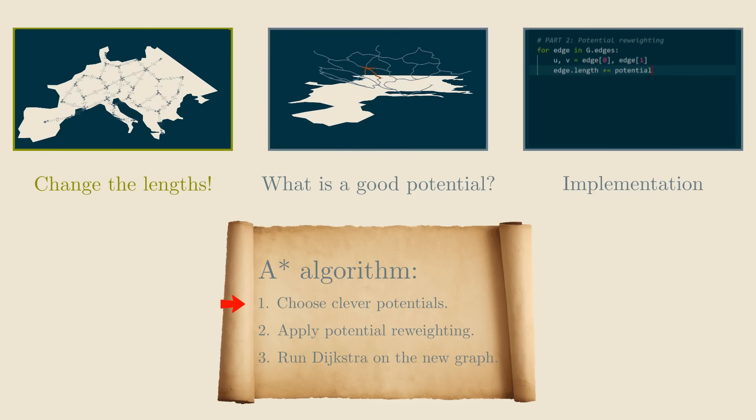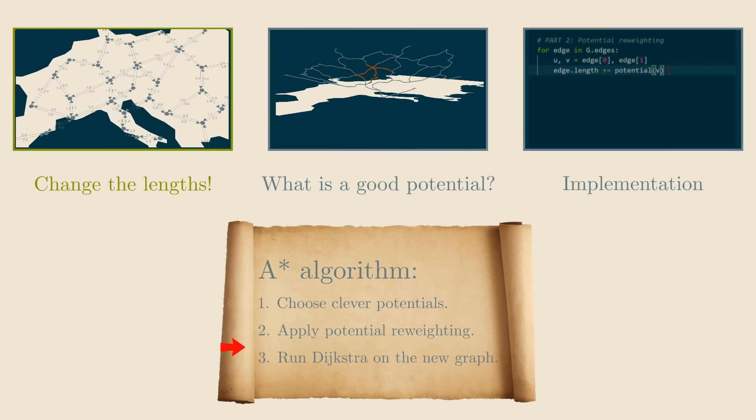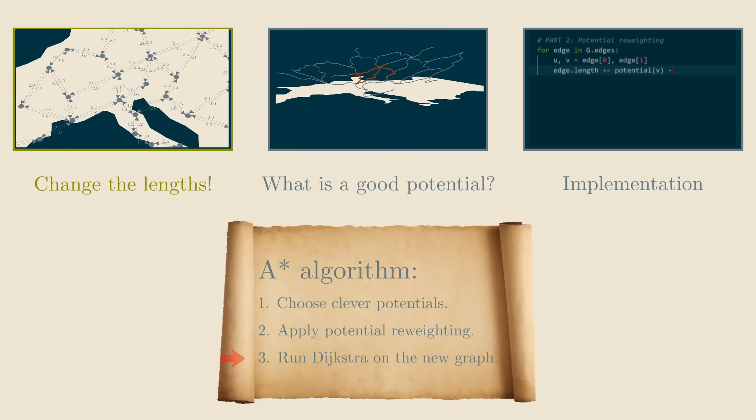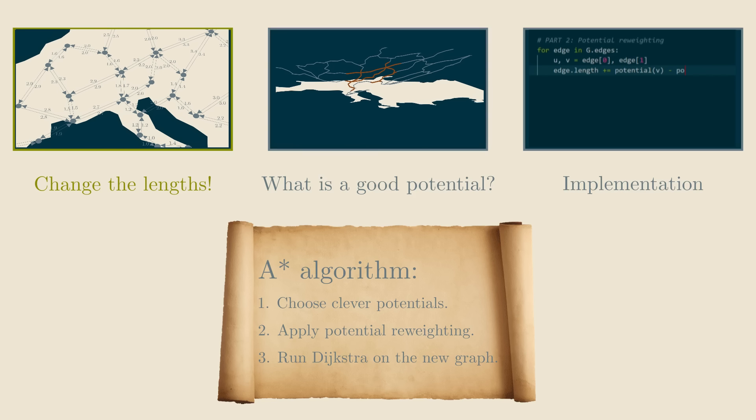First, we choose some clever potentials. Second, we apply our potential reweighting trick. And third, we run Dijkstra on the reweighted graph. And that's basically the A-star algorithm. But there's still a lot to understand, like how to pick the potentials in the first step, and how should we implement it. Let's see.